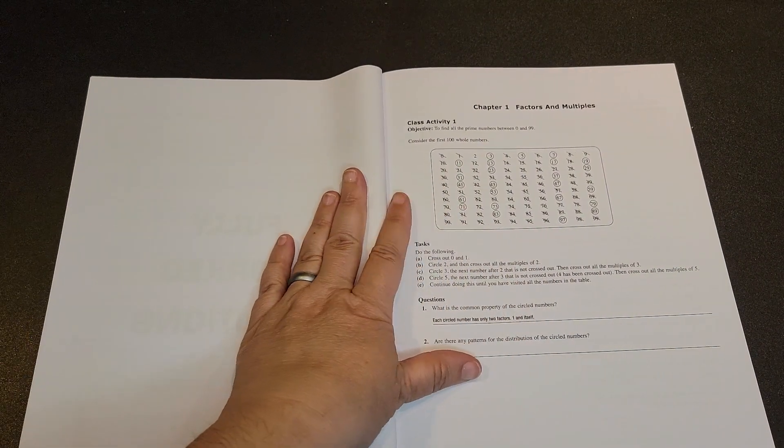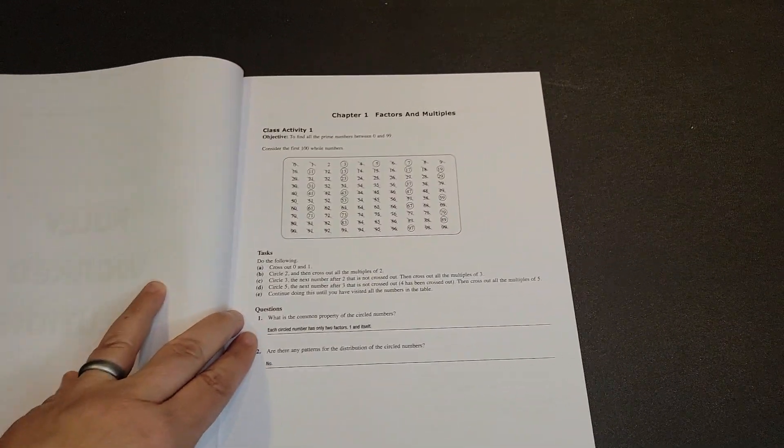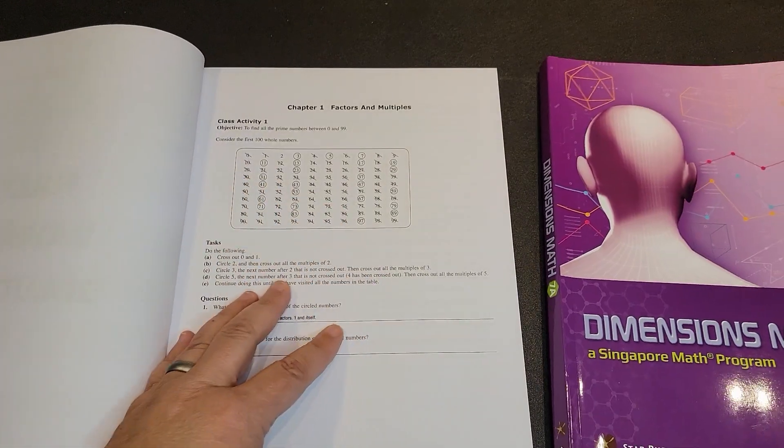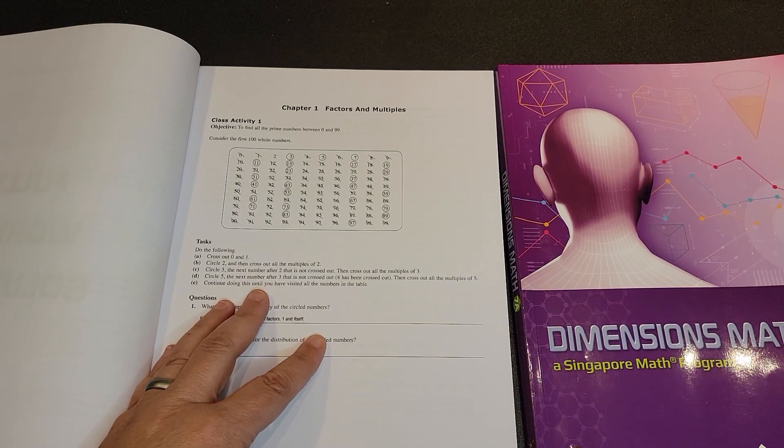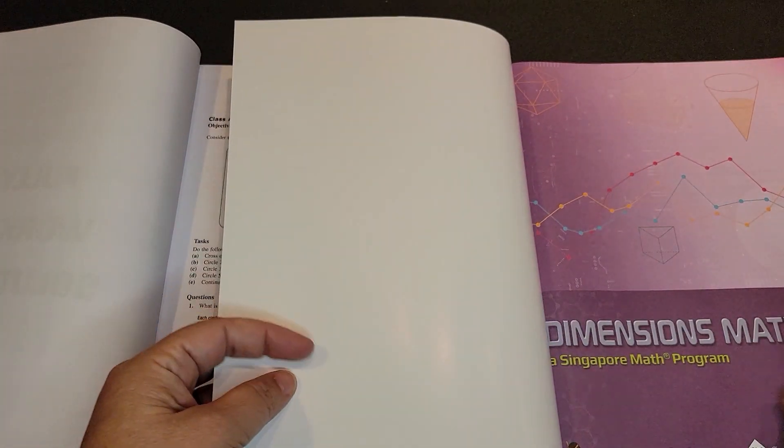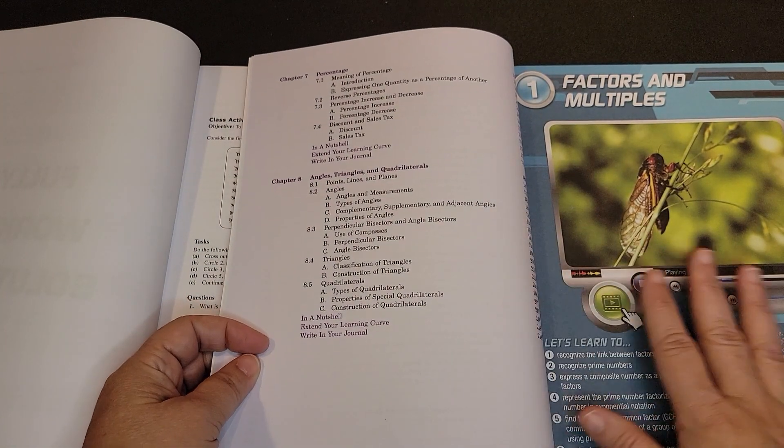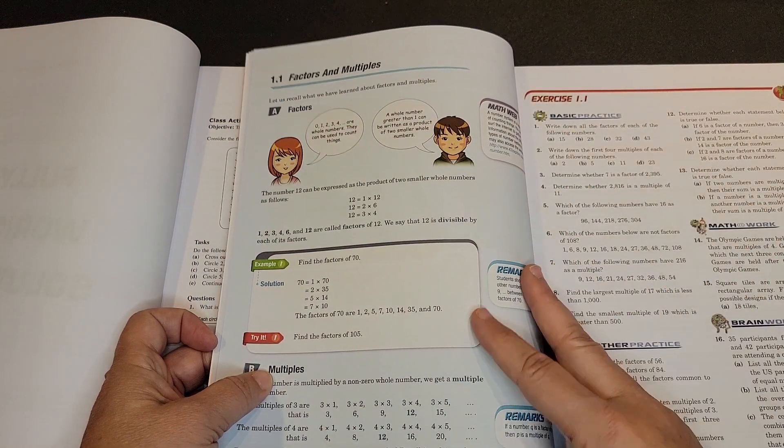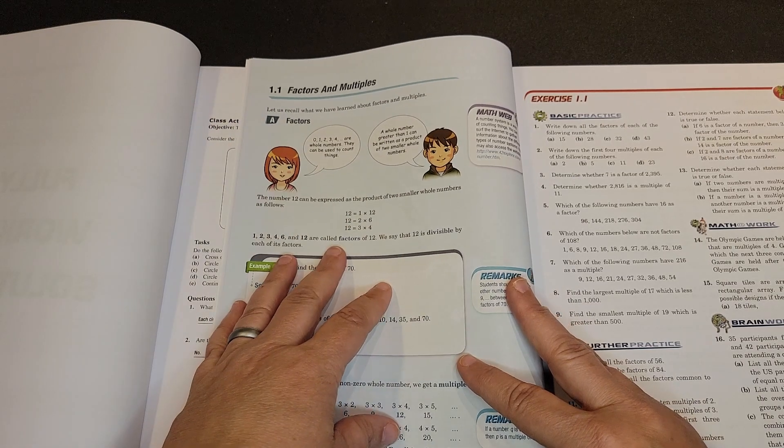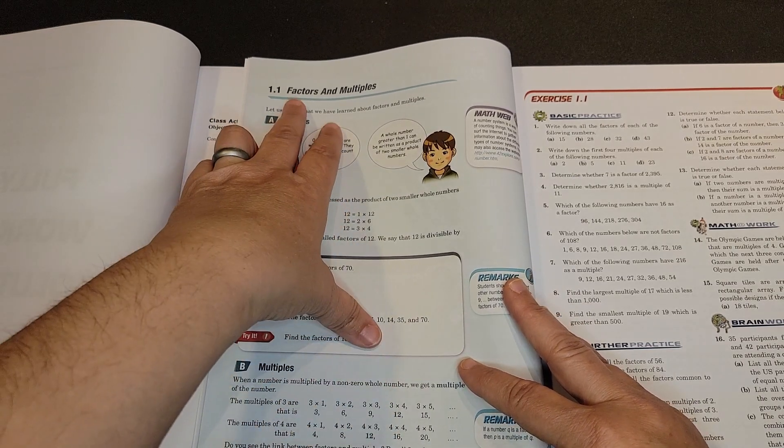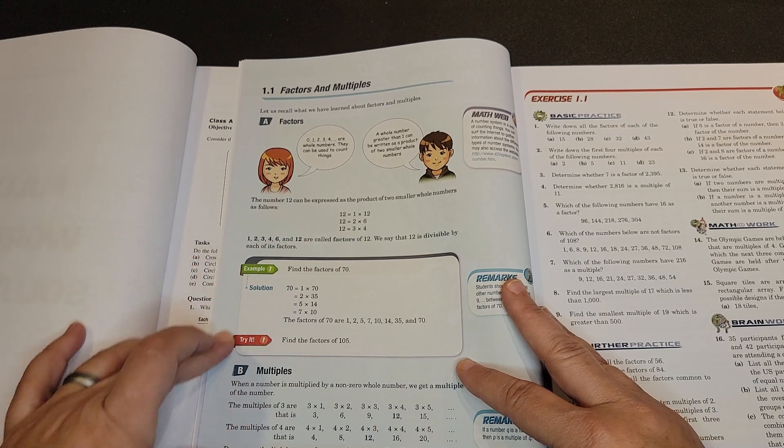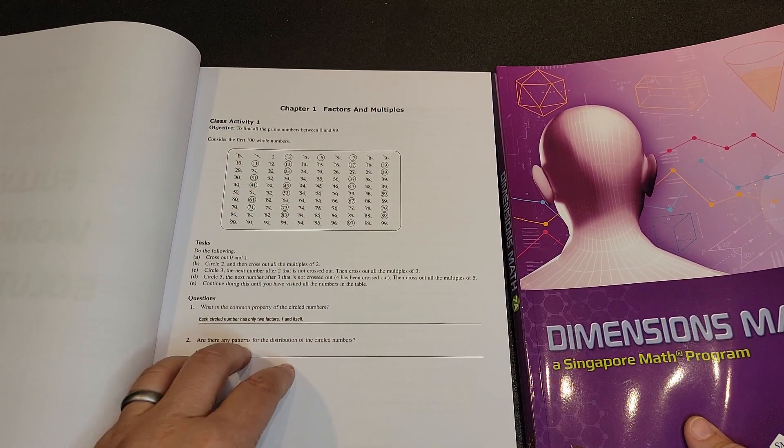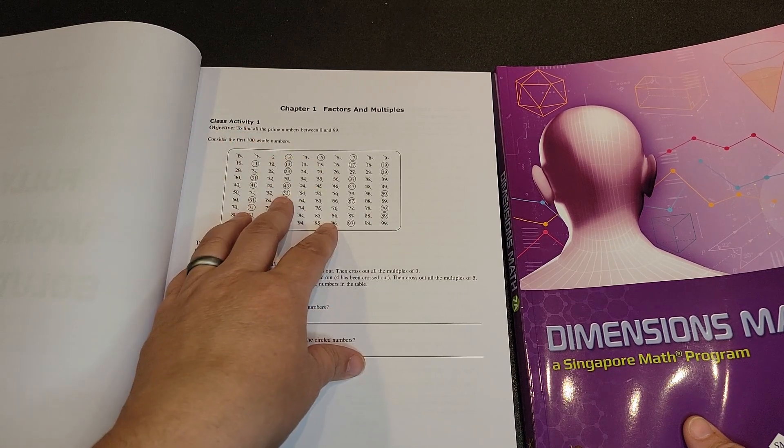Now, this was a little bit confusing to me when I first looked at it because the way they have this set up, this is your first page on chapter one of factors and multiples. But if you look over here in your textbook, you can see here is your introduction. Then your first activity is here. The first activity is for factors and multiples. And you can see here's your example one, try one. But the first thing they have in the teacher's guide is the class activity.